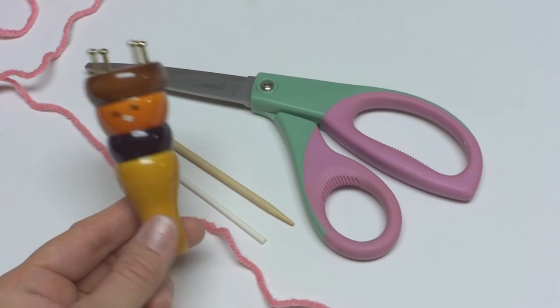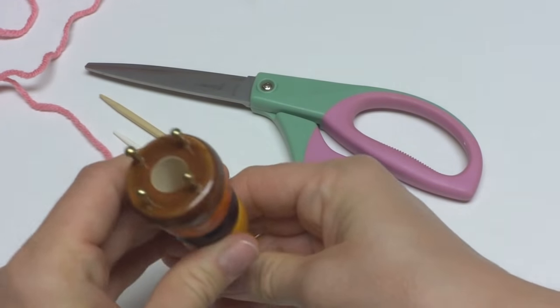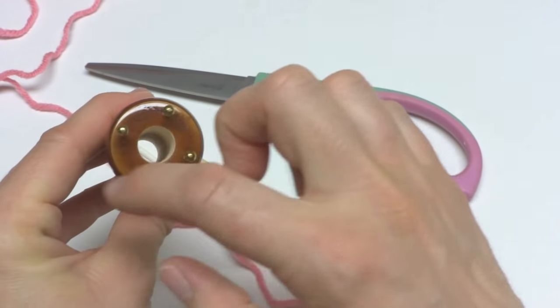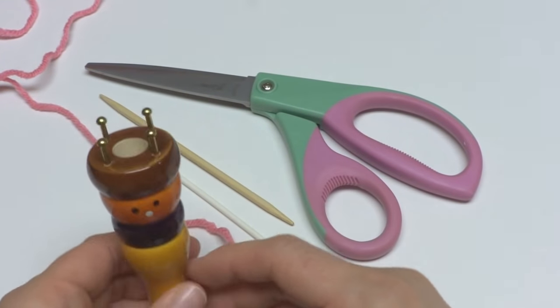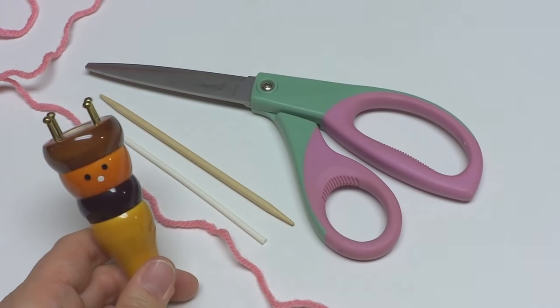You can find them at your craft store. What it essentially is, is a tube with some pegs at the top. Mine happens to be wood, and I have four pegs. Sometimes they have six pegs.